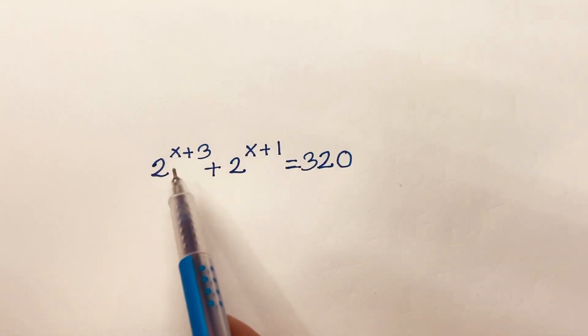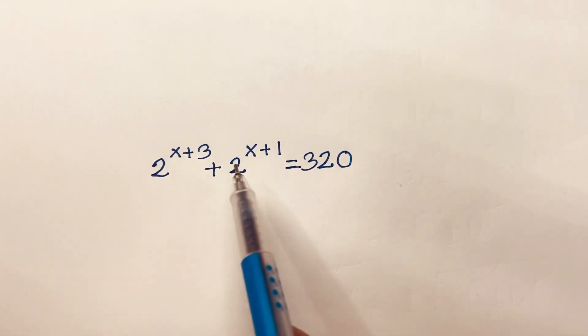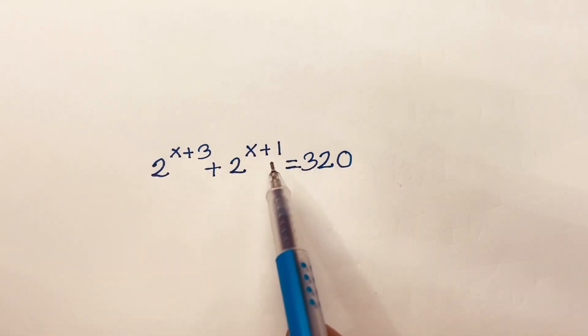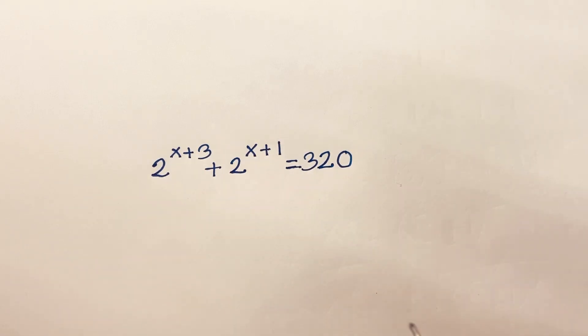How to solve 2 to the power x plus 3, plus 2 to the power x plus 1, is equal to 320.